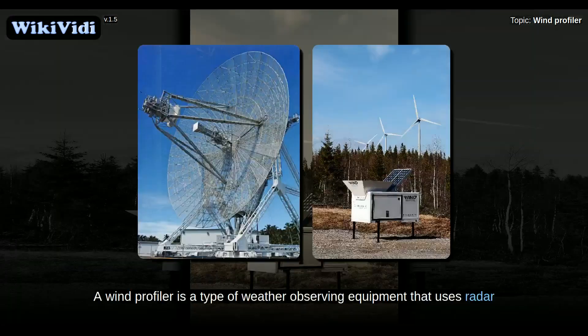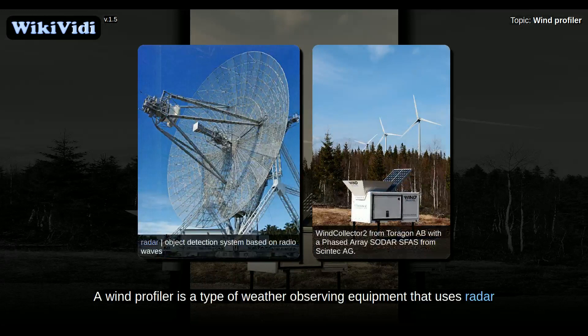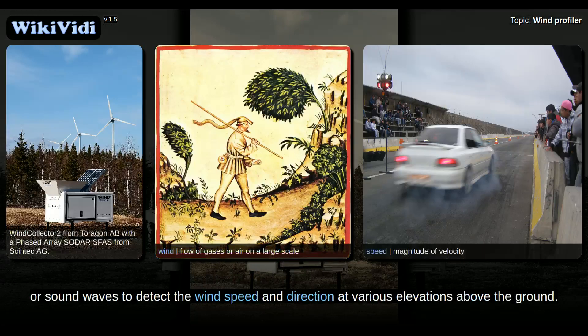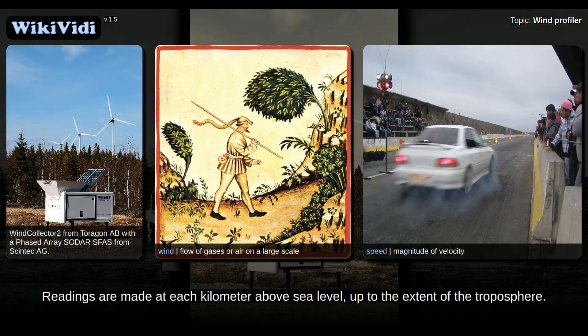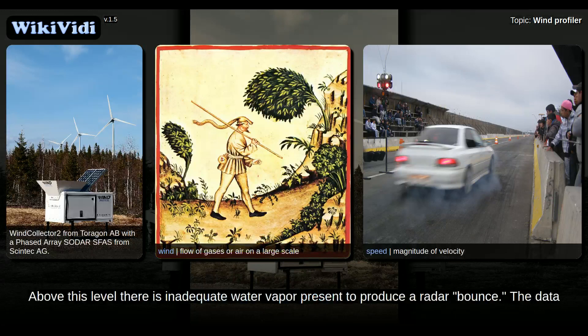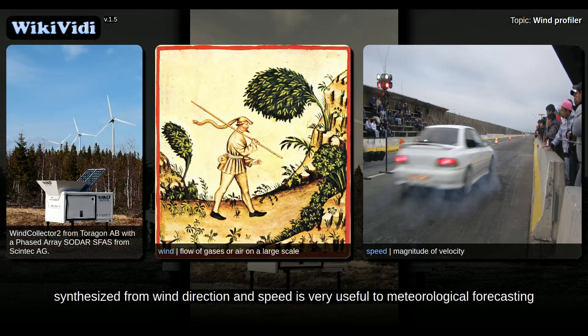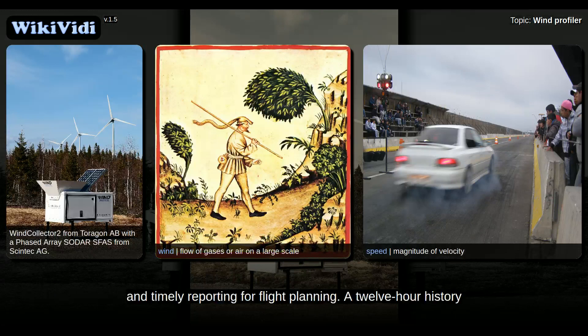A wind profiler is a type of weather-observing equipment that uses radar or sound waves to detect the wind speed and direction at various elevations above the ground. Readings are made at each kilometer above sea level, up to the extent of the troposphere. Above this level there is inadequate water vapor present to produce a radar bounce. The data synthesized from wind direction and speed is very useful to meteorological forecasting and timely reporting for flight planning.